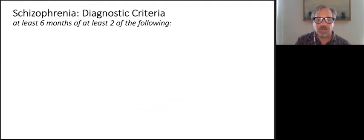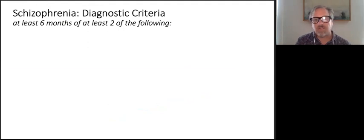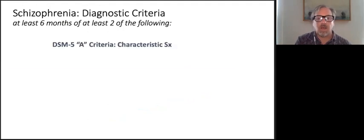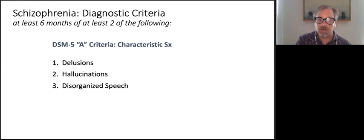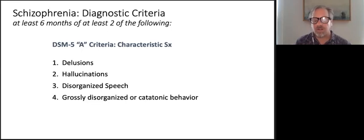Let's talk about schizophrenia, because this is really a very common diagnosis. According to DSM-5, you've got to have at least six months of at least two of the following: delusions, which are false beliefs; hallucinations, which are erroneous sensory experiences; disorganized speech; or grossly disorganized or catatonic behavior.